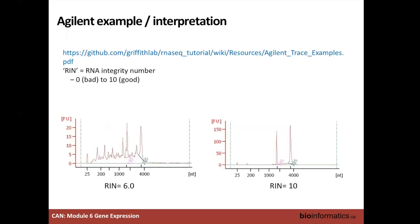One of the first things you need to check is the quality of the RNA in your samples. One measure is the RNA Integrity Number (RIN) from the bioanalyzer. A maximum quality sample has a RIN of 10, showing two large peaks of ribosomal RNA. A RIN of 6 means you have a lot of smaller RNA fragments, indicating RNA degradation. We typically require a RIN of 7 or above to generate RNA-seq data, though we might go lower for a very precious sample, knowing that quality may suffer.